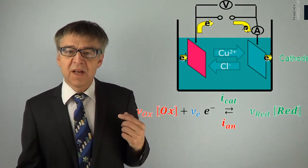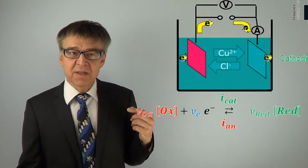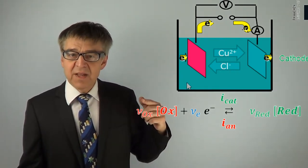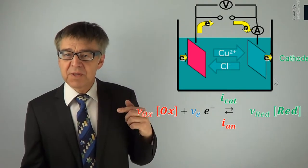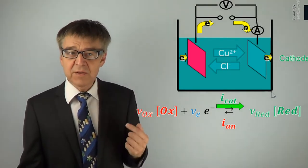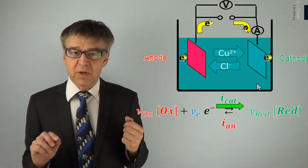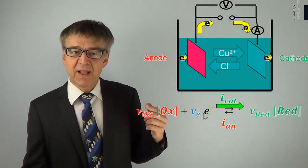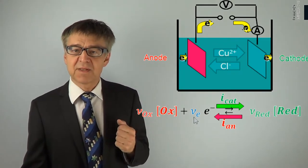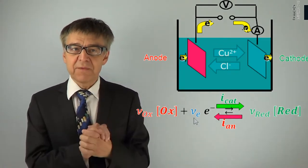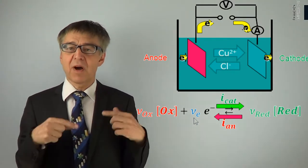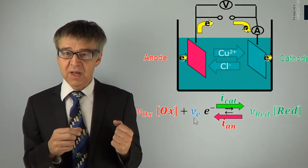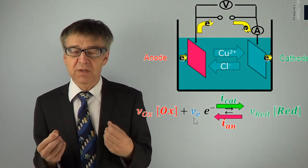At the cathode, an oxidized species takes electrons from the metal and thus turns into a reduced species. At the anode, the reverse is true: a reduced species gives electrons to the metal and becomes an oxidized species. Anodic current flow is always coupled with an oxidation – loss of electrons. Cathodic current is always coupled with a reduction – gain of electrons.